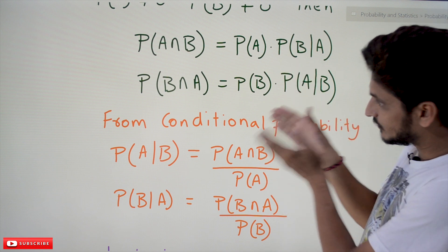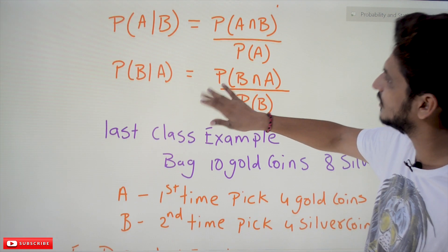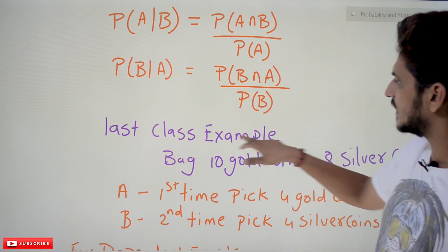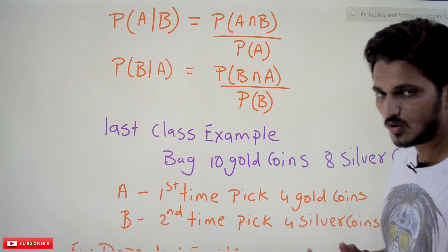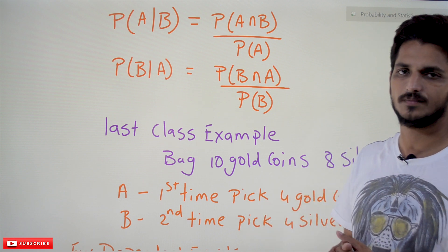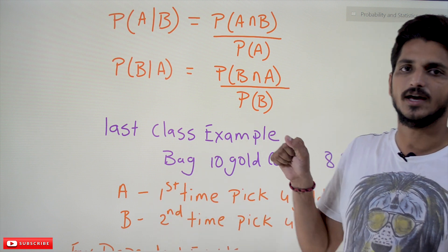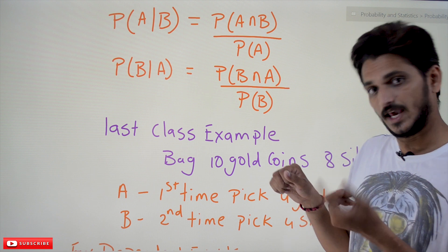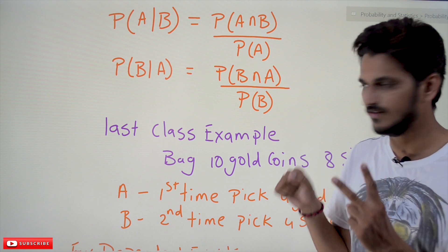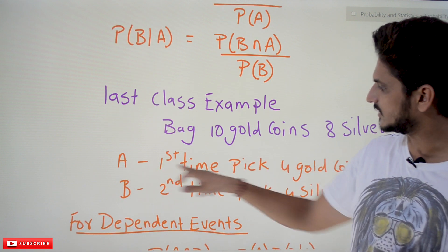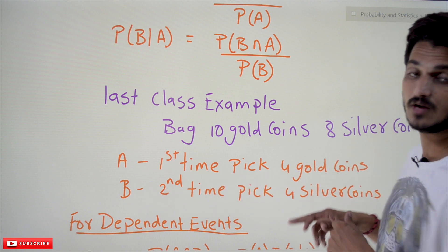Let's refresh the example we discussed in our previous class to give you a better understanding of the multiplication rule. The example: a bag contains 10 gold coins and 8 silver coins. If you randomly pick 4 coins from the bag — that is the first event A — and then pick 4 more coins — that is the second event B — event A is picking 4 gold coins and event B is picking 4 silver coins.